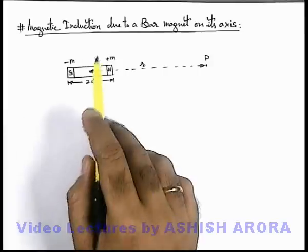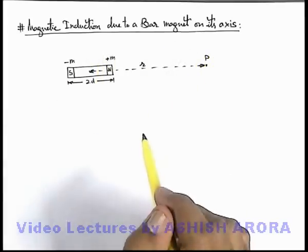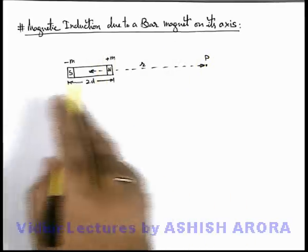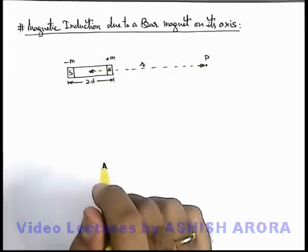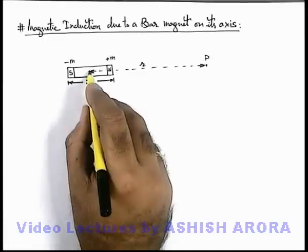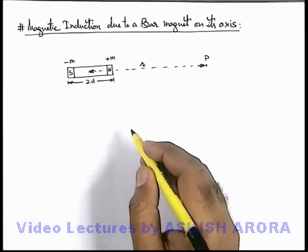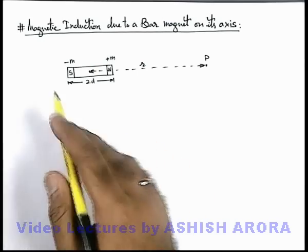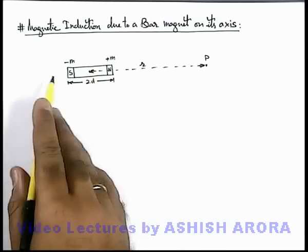Let's now study the magnetic induction due to a bar magnet on its axis. The axis of a magnet is the line along which the magnet is placed. From the center of the magnet at a distance r, there is a point P on the axis at which we wish to find the magnetic induction due to the two poles of the magnet.